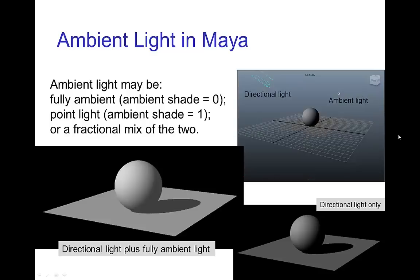In Maya, they have an option for an ambient light which actually has an adjustable parameter called the ambient shade. And if this ambient shade is set to zero, then it's a true ambient light that is uniformly illuminating from all directions. If the ambient shade is set to one, then the ambient light acts just like a point light. And you can have a mixture of the two.